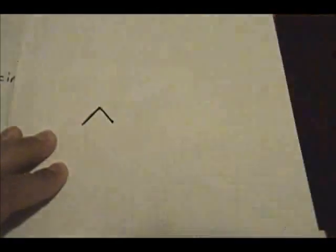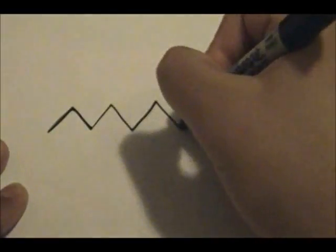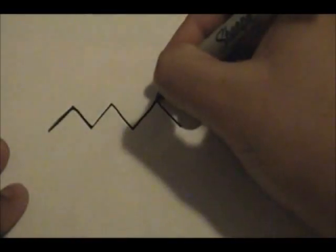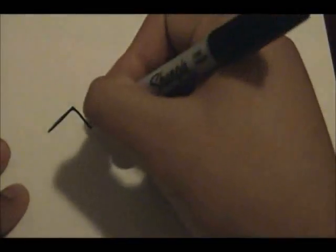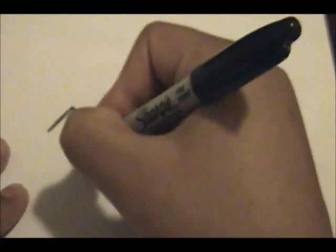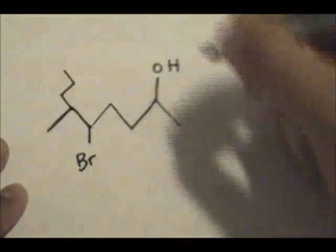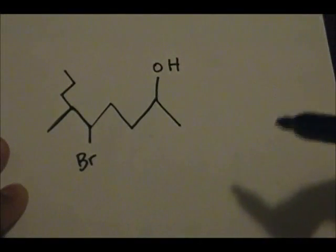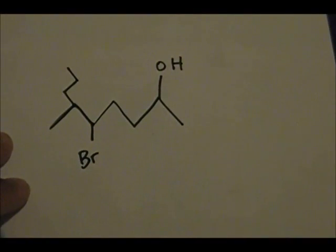Let's say we have this carbon chain. We have an alcohol at this position right here, and we have a bromine here, and this little piece over here.